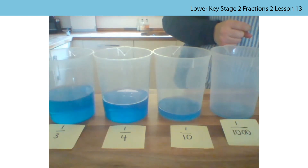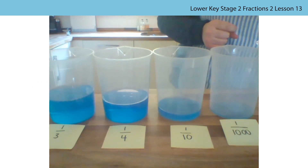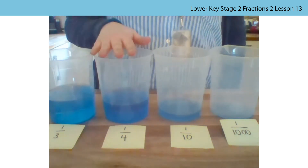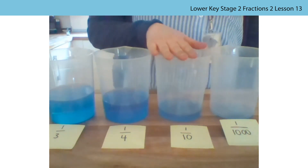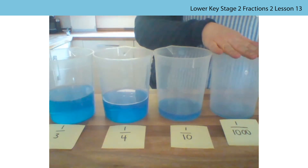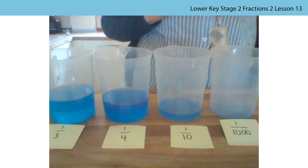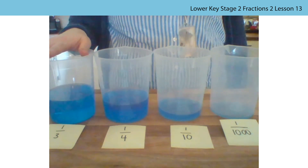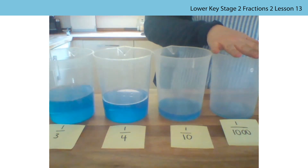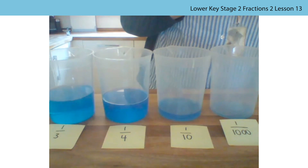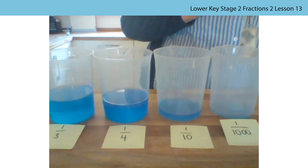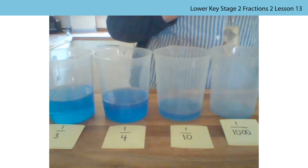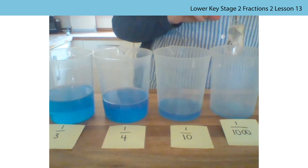Here are our estimated unit fractions that we have poured: here is one third, one quarter, one tenth, and one thousandth. You can see that one third is a larger unit fraction than one thousandth, which proves our stem sentence — when comparing unit fractions, the greater the denominator, the smaller the fraction.